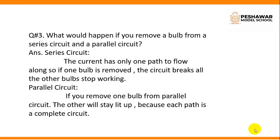Question number 3: What will happen if you remove a bulb from a series circuit and a parallel circuit? Answer: In a series circuit, the current has only one path to flow along, so if one bulb is removed, the circuit breaks and all the other bulbs stop working. In a parallel circuit, if you remove one bulb, the others will stay lit up because each path is a complete circuit.